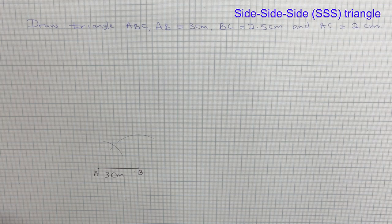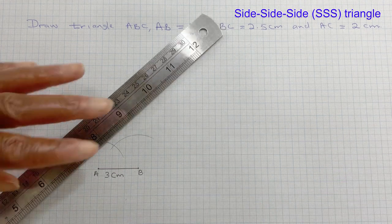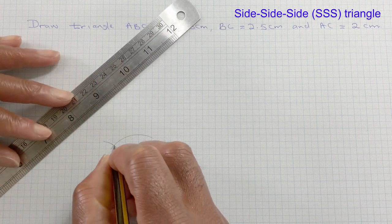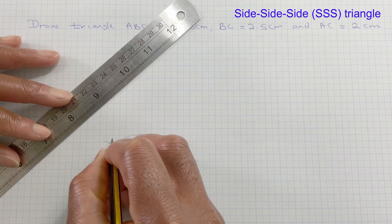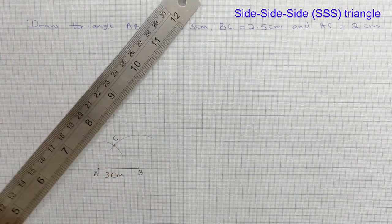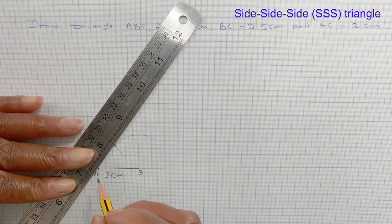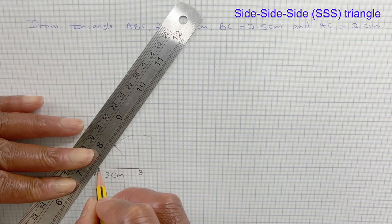Now we get a ruler and a pencil and mark the point C. You need 2 points to draw a straight line.